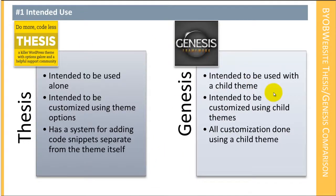On the other hand, the Genesis intended use case is to be used with a child theme. A child theme is essentially a theme that augments or changes another theme. Thesis came up with this system of customizing themes a fair bit before WordPress came up with the child theme system. The child theme is WordPress's way of trying to solve the same problem that Thesis does with the custom folder, custom CSS, and custom functions PHP files.